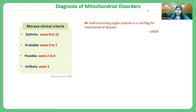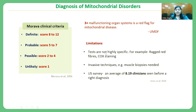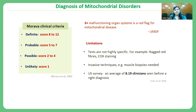As per UMDF, if there are 3 or more malfunctioning organ systems, that is a red flag for mitochondrial disorders. However, there are several limitations to traditional diagnostic techniques — they are not highly specific (for example, ragged red fibers can be seen in other disorders too), and they are invasive (histological techniques require muscle biopsies). In a US survey, a patient sees an average of 8.19 clinicians before arriving at a diagnosis of mitochondrial disease — so the diagnostic odyssey is quite complex and burdensome.